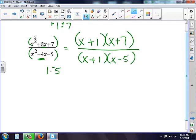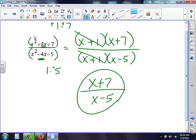Then I look at what I have. I notice I have an x plus 1 on the top and on the bottom. Therefore, they can cancel. And I'm left on top, x plus 7. On the bottom, x minus 5. Here we go.